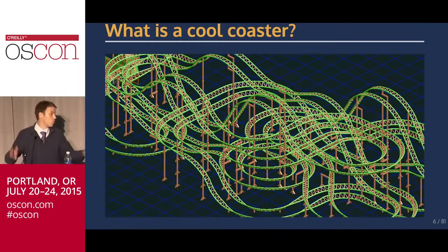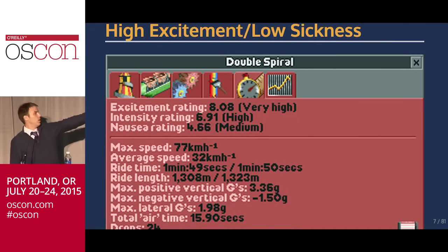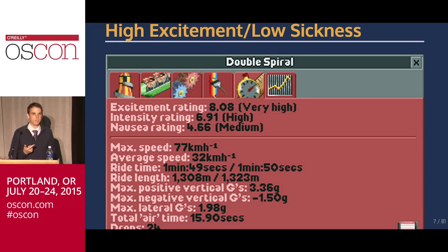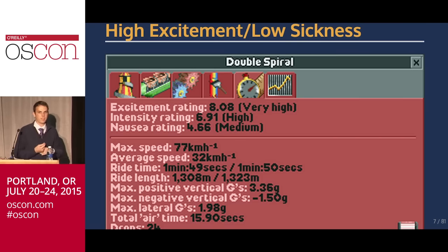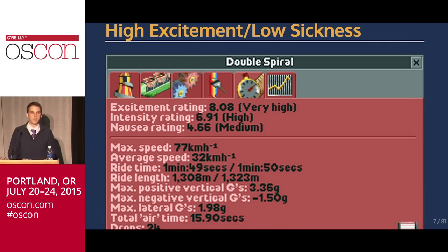What is a cool coaster? We need to figure out how to encode this in the game. The game gives you nice parameters when you build a coaster — you get ratings. In particular, you get excitement, nausea, and intensity. If you can figure out how those are generated, that's a really easy jumping-off point, and something everyone can agree on as defining a cool coaster. This built-in rating system was encouraging — we could piggyback on it.